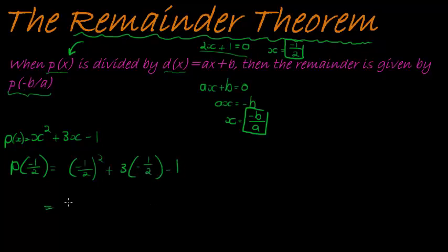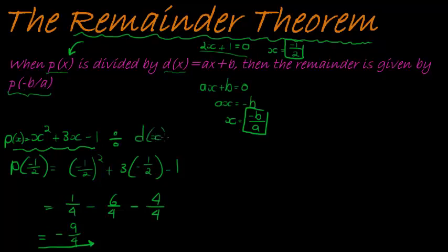Okay, and I simplify it. What do I get? Here, I get a quarter plus, or actually minus 3 over 2, and let's make it minus 6 over 4. Okay, minus 1, that would be minus 4 over 4. So do that, minus 11, no, minus 9 over 4.